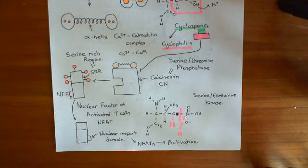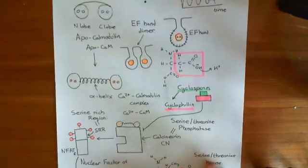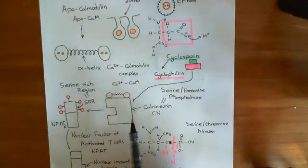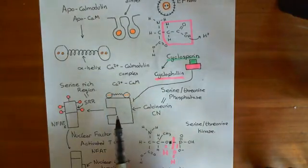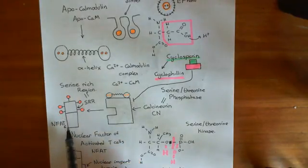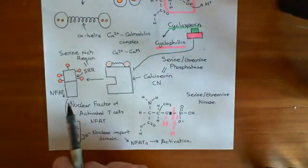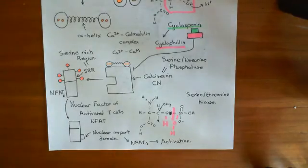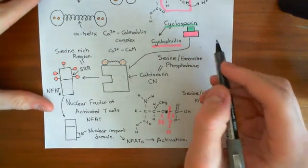If you inhibit the calcineurin enzyme, then even if signal 1 and signal 2 are delivered to your T-cells, calcium will go up and calcium-calmodulin complexes will form, but calcineurin will not become activated. If calcineurin is not activated, it can't cleave the phosphate groups off the serine residues of NFAT, so NFAT remains inactive. If NFAT remains inactive, the T-cell does not become activated, stopping the adaptive immune response — making cyclosporine a very potent immunosuppressant.